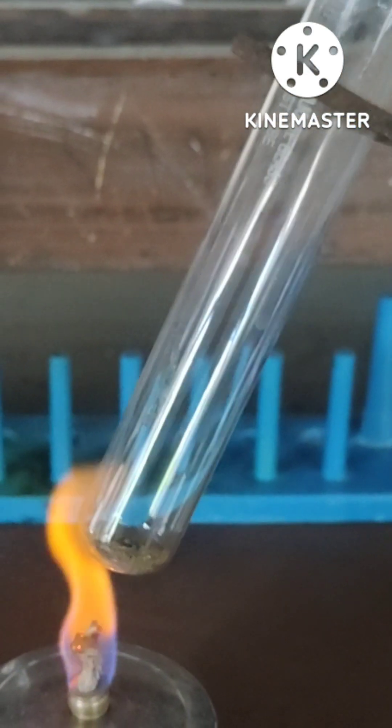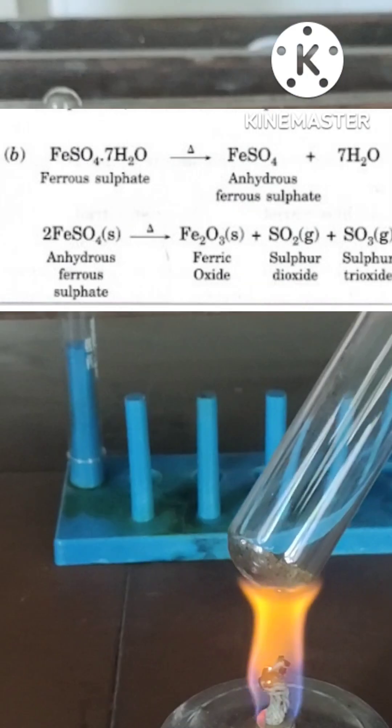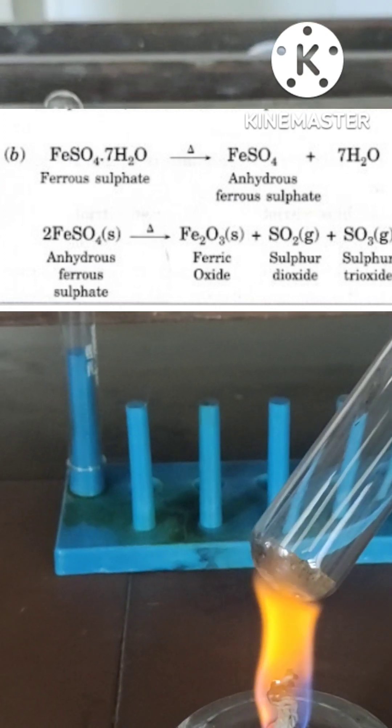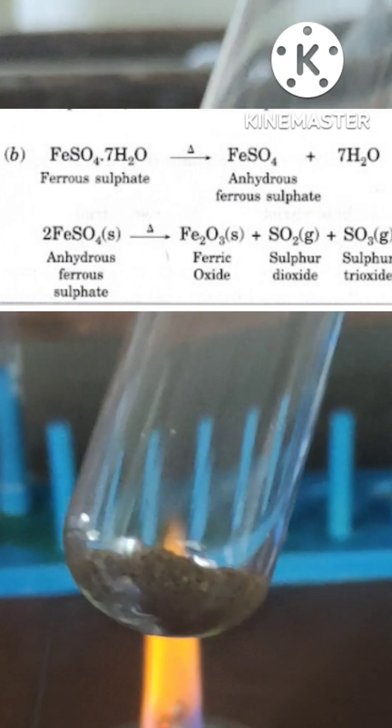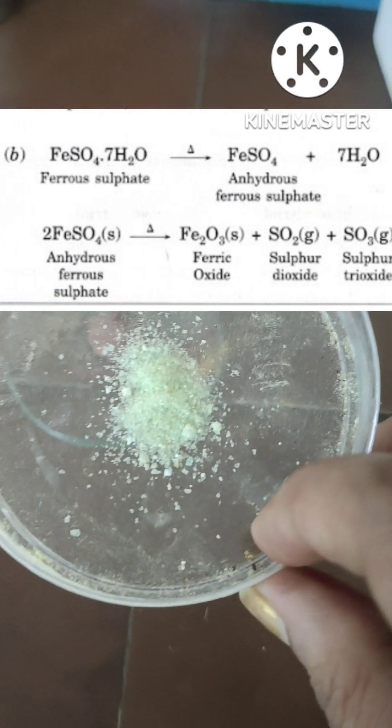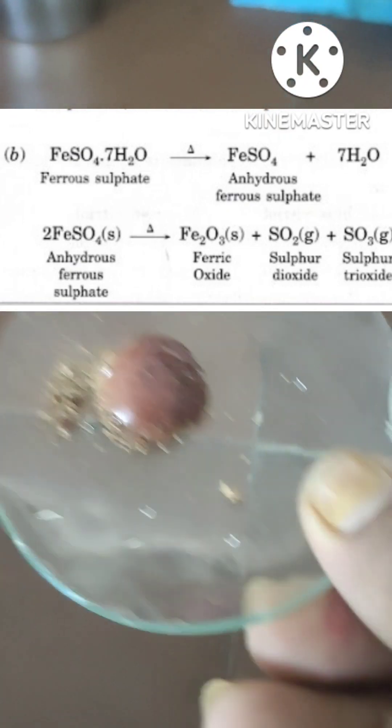The final products formed after heating the ferrous sulfate are ferric oxide, sulfur dioxide, and sulfur trioxide. Thank you for watching.